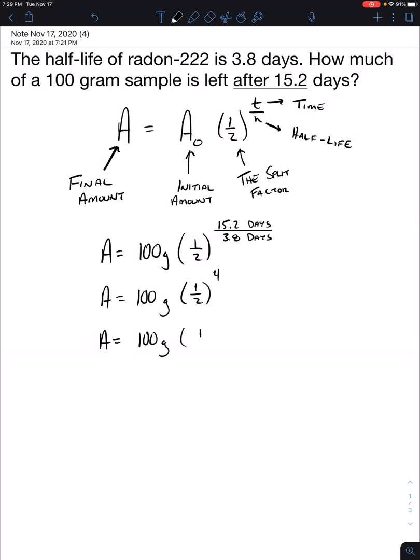Then you're going to do 100 divided by 16. 100 divided by 16 and you're going to get a final answer of 6.25 grams of radon-222 remains.